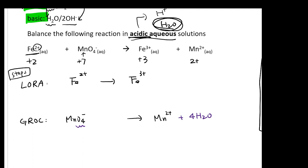When you add four H2O to balance the oxygen, you introduce hydrogen. To balance the hydrogen, you use H+. Therefore, you need to add 8H+ on the left side. At this point, the atoms in the reduction half-reaction are balanced.